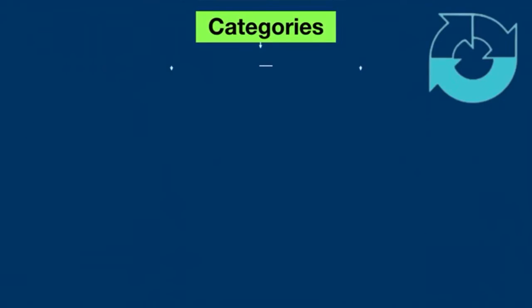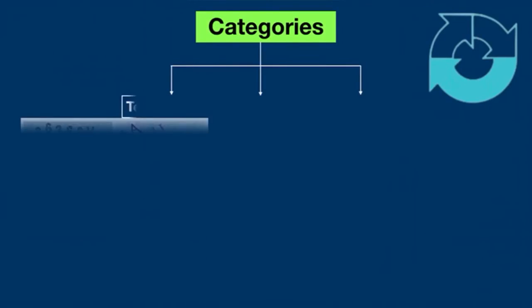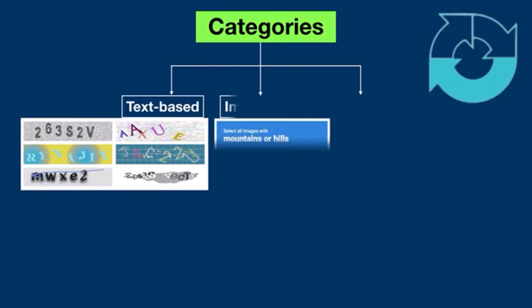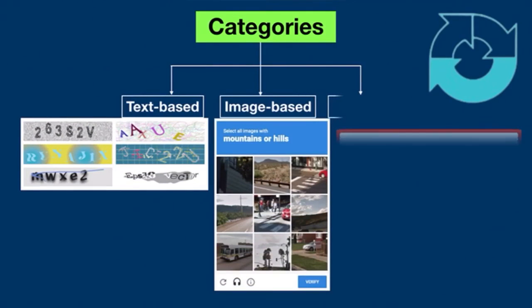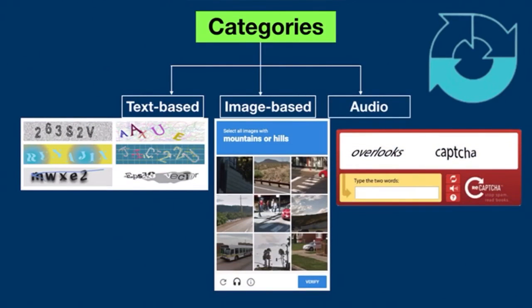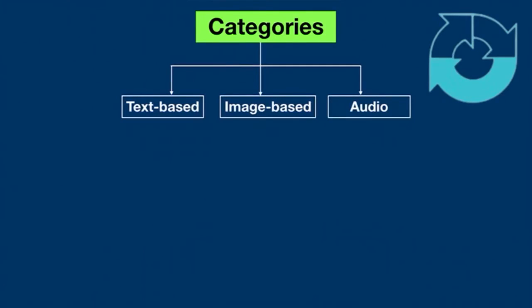CAPTCHA falls into three main categories: text-based, image-based, and audio — the audio format being designed for visually impaired people.